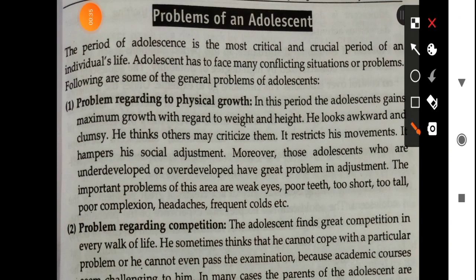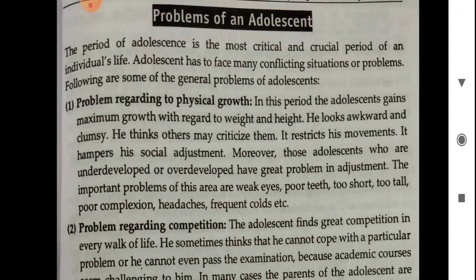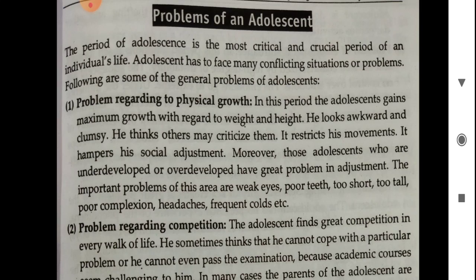Today's topic after that is: what is it? Yes, you are right - that is 'Problems of an Adolescent.' The most important thing I already told you is that the adolescent period is considered a very critical and crucial period of an individual's life, because so many problems arise and sudden changes occur. Many psychologists have studied adolescence, and the most important psychologist is Stanley Hall, who gave the concept of 'stress and storm' for the adolescent period.